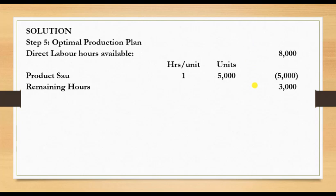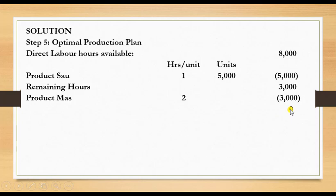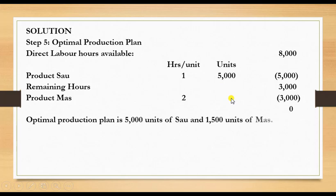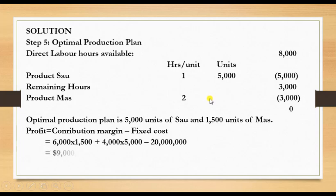After allocating 5,000 hours to Sal, we have 3,000 hours remaining. Mass requires 6,000 hours to meet full demand of 3,000 units, but only 3,000 hours are available. So we use all remaining 3,000 hours for Mass: 3,000 hours ÷ 2 hours per unit = 1,500 units of Mass. The optimal production plan is therefore 5,000 units of Sal and 1,500 units of Mass.